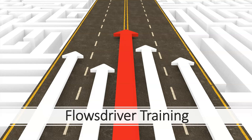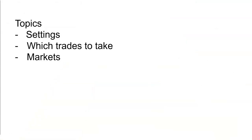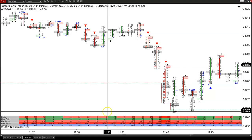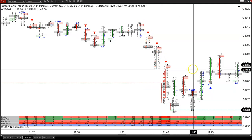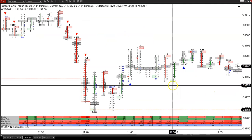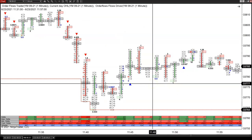Hey everybody, it's Mike from Order Flows, and welcome to this special training video on the Order Flows Flow Driver. In this presentation I'll be talking about the settings, the general settings and the effect that they have on the indicator. I'll be talking about which trades to take, and I'll jump into the different markets and what sort of settings you want to be using for them. So this is a normal footprint chart and the Flow Driver is added on — you can see there's red down triangles for sells and blue up triangles for buys. You don't have to use a footprint chart for this indicator; you can use a normal bar chart.